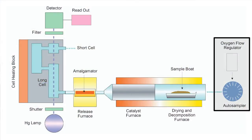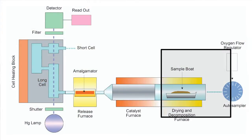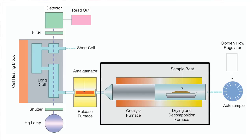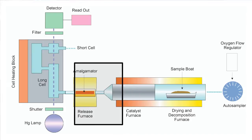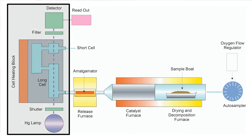The decomposition products are carried with oxygen through a catalyst bed where interferences are removed and all species of mercury are reduced to elemental mercury. Mercury is trapped onto a gold amalgamator and upon heating travels through a single beam atomic absorption spectrophotometer for measurement.